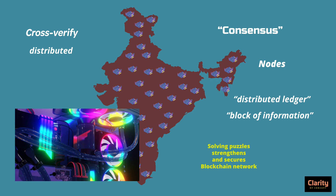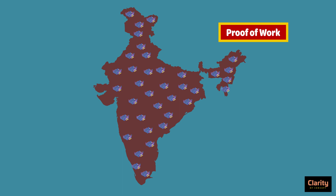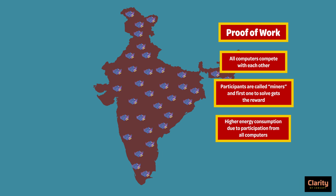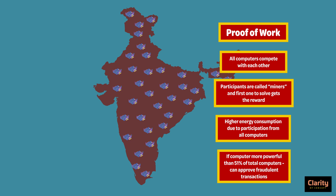But who will solve these puzzles to gain the reward? The current method followed is proof of work. In this method, in order to add a new block, all computers across the world start competing with each other and all try to solve at the same time. The first one to solve gets the reward and the new block is added. But this results in a lot of energy consumption. Another drawback of this proof of work method is that if you have a computer more powerful than 51% of the total computers on the network, you can add fraudulent blocks and approve fake transactions.